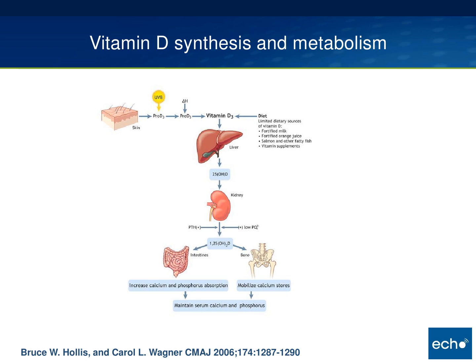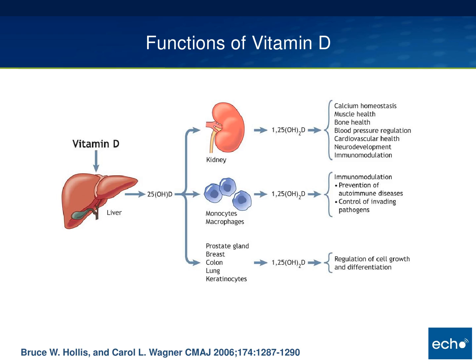Vitamin D receptors are found in most of the tissues in the body. In the intestines, vitamin D increases calcium and phosphorus absorption. In the bones, they mobilize the calcium stores by converting to mature osteoclasts. In the kidneys, they help in reabsorption of calcium in the glomerular filtrate. So vitamin D helps in maintaining serum calcium and phosphorus.